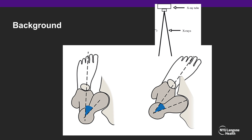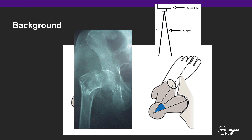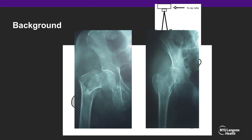This is demonstrated in this slide: internally rotating the leg brings the femoral neck, which is in native anteversion, into a perpendicular alignment to the trajectory of the x-ray beam. As you can see in this x-ray, the patient's hip is in external rotation and shortening, and once internally rotated and pulled with traction, you can see the femoral neck is now perpendicular to the x-ray beam.